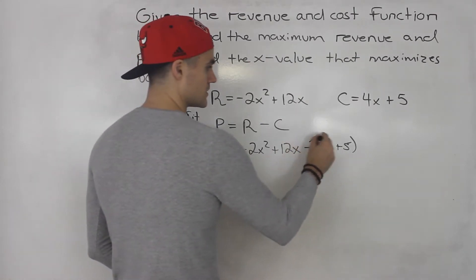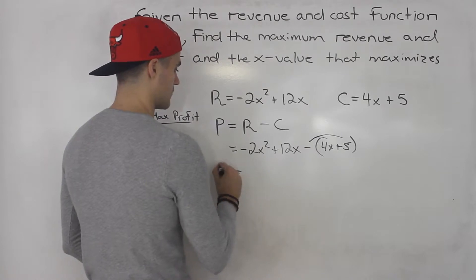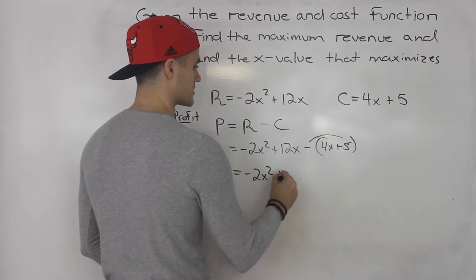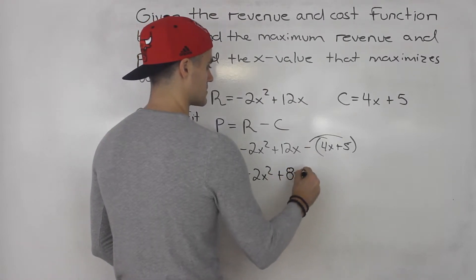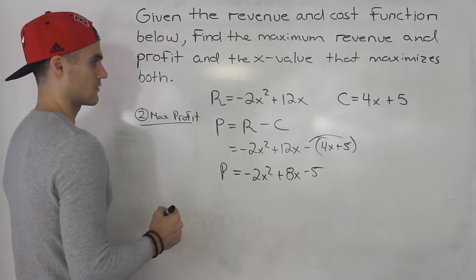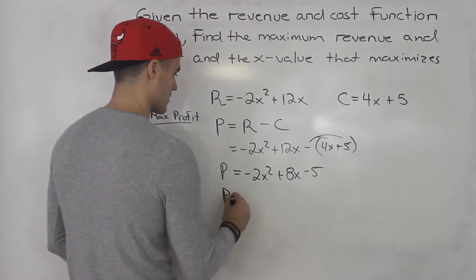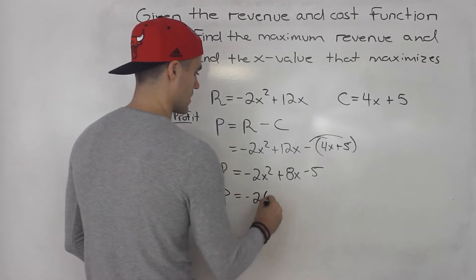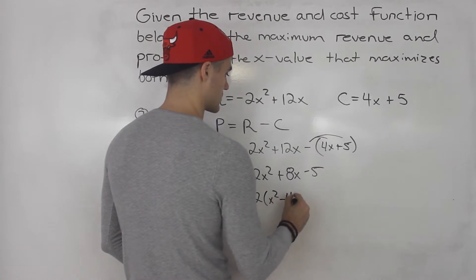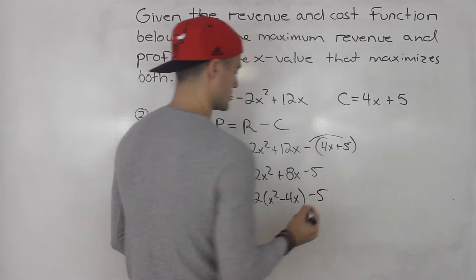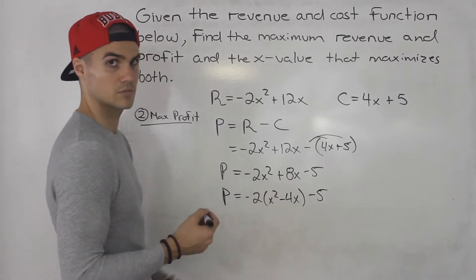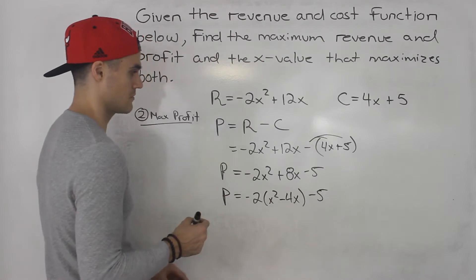And then you would distribute this negative 1 inside the bracket. So you'd have profit equals negative 2x squared, 12x minus 4x gives us 8x, this would be minus 5. So from here, we can just complete the square. 8x divided by negative 2 gives us negative 4x. And this is minus 5. So I just factored out the negative 2 from these two, completing the square for the profit to find the maximum profit.